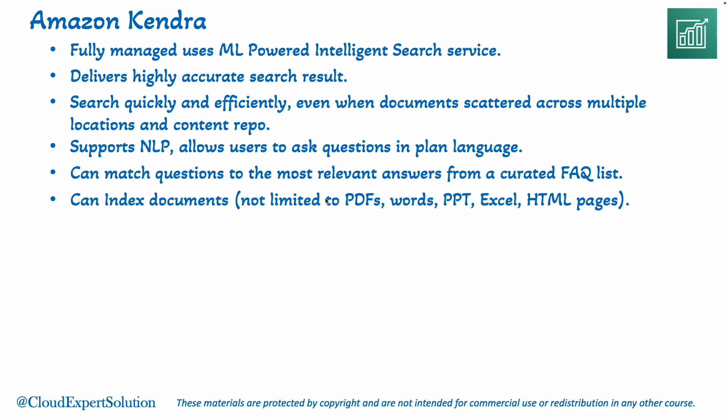Amazon Kendra can index a wide range of document types, including PDFs, Word documents, HTML pages, making it easy to search through diverse content. You can also fine-tune search results based on content attributes, freshness, and user behaviors to improve the accuracy of the search results.